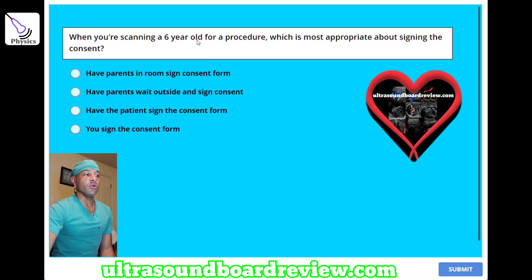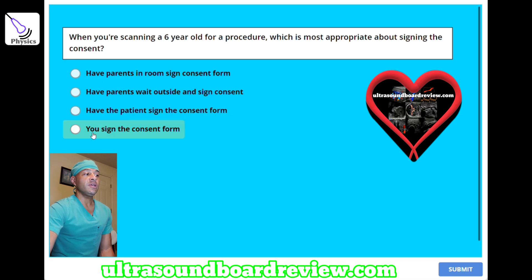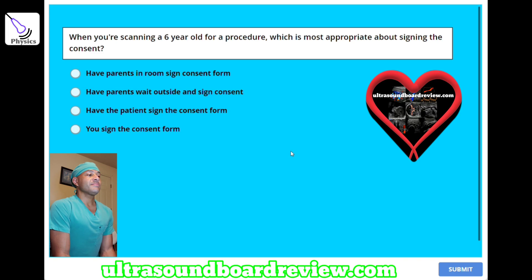When you're scanning a 6-year-old for a procedure, which is most appropriate about signing the consent? A, have parents in room sign consent form; B, have parents wait outside and sign consent; C, have the patient sign the consent form; or D, you sign the consent form. The answer is A, have parents in room sign consent form.